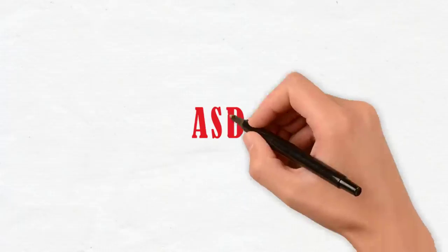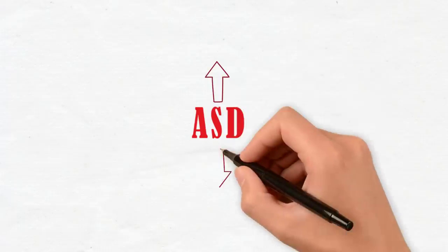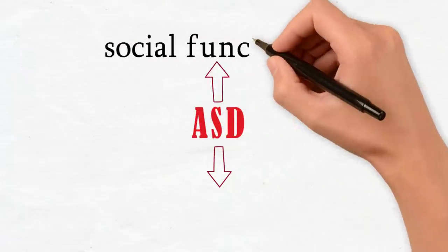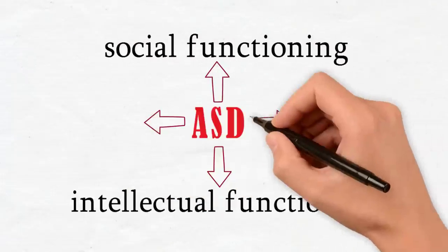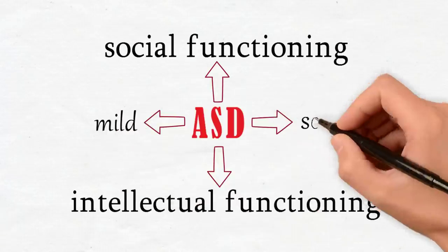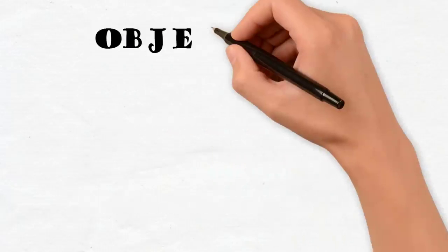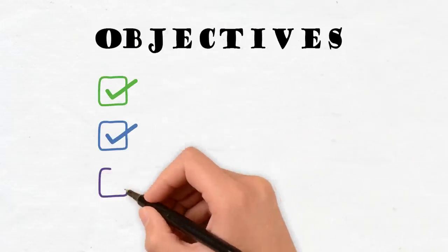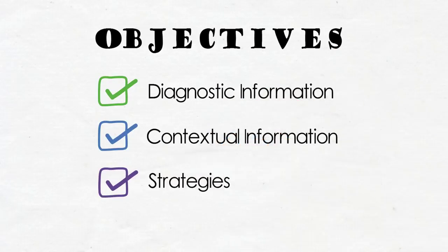ASD wasn't narrowly defined, and we mean that loosely because it's a spectrum disorder, until recently when the diagnosis was restricted to individuals with severe social and or intellectual functioning. It is understood that ASD can range from mild to severe as there is a wide degree of variation of how it affects a person. In this video, we're going to talk about ASD's diagnostic information, contextual information, and strategies.